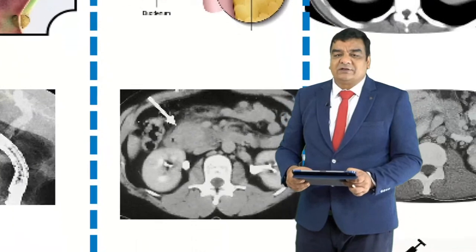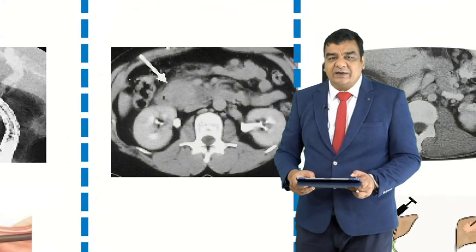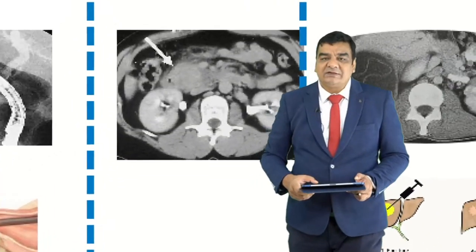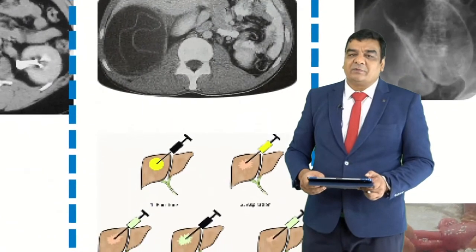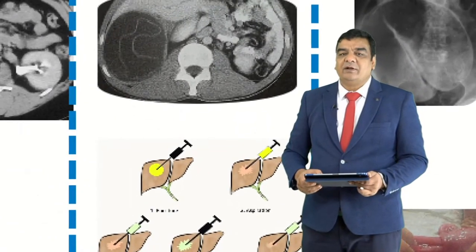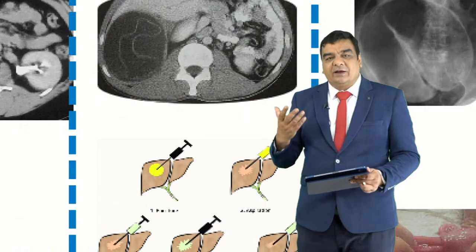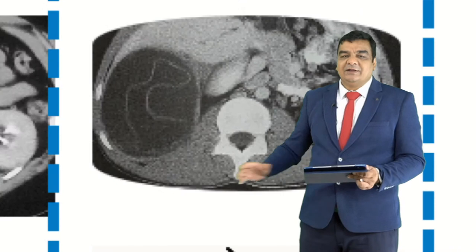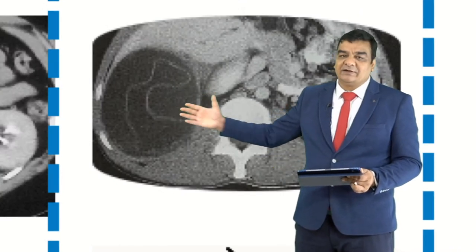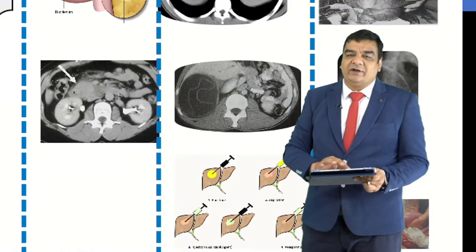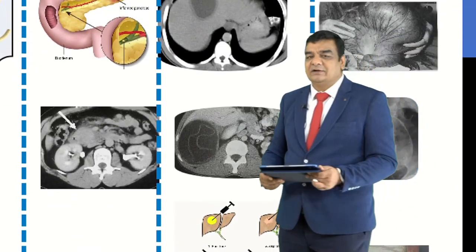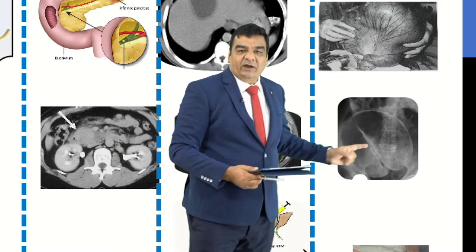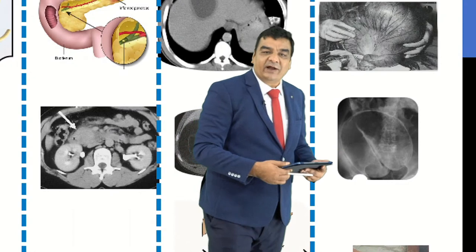For treatment, we do pancreatic enzyme testing and CT scan for radiological confirmation; management is mostly conservative. Other pathologies presenting in the right hypochondrium include pyogenic liver abscess, amoebic liver abscess, or hydatid cysts — the water lily sign is seen in hydatid cysts inside the liver. There may also be sigmoid volvulus, showing a coffee bean sign and bird of prey sign.